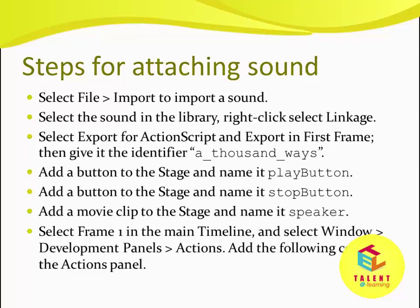Add a button to the stage and name it play_button. Add another button to the stage and name it stop_button. Add a movie clip to the stage and name it speaker. Select Frame 1 in the main timeline, go to Window, Development Panels, select Actions, and add the following code to the Actions panel.